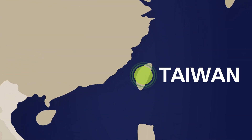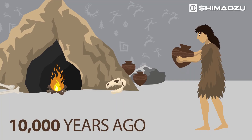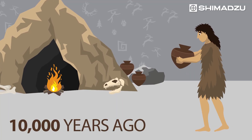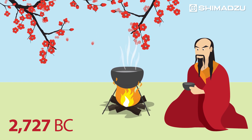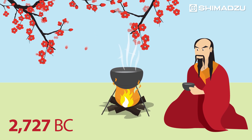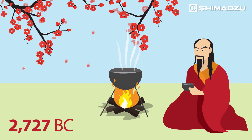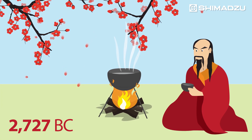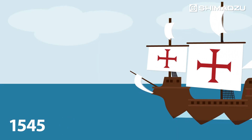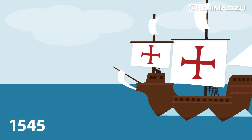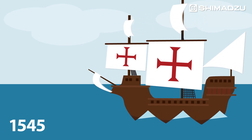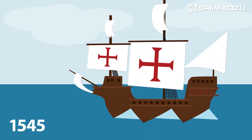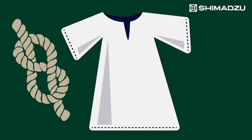Archaeologists in Taiwan unearthed ancient pottery with traces of cannabis more than 10,000 years old. And the first documented use of cannabis as herbal medicine was in the year 2727 BC by Chinese Emperor Shen Nung. It wasn't until 1545 that cannabis, in the form of hemp, finally arrived in the New World with the Spanish conquistadors. For centuries, hemp was used to make rope, clothing and other everyday items.